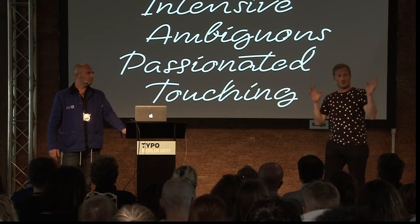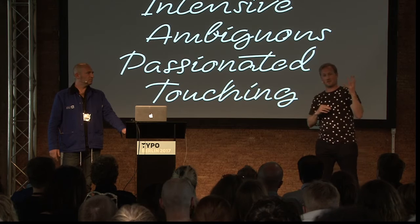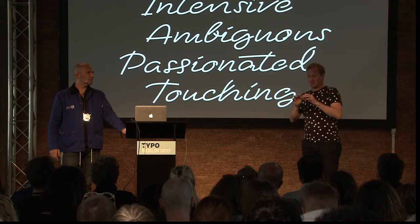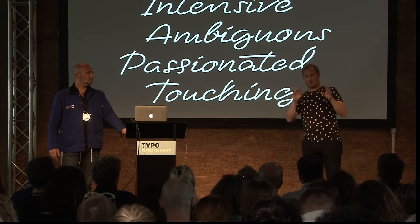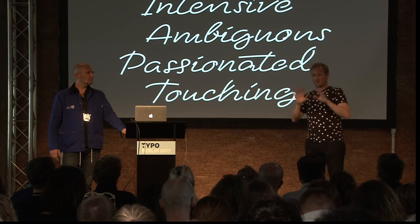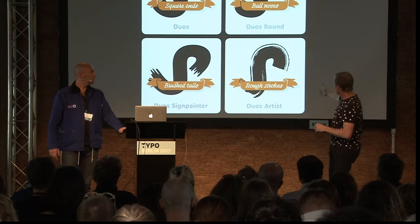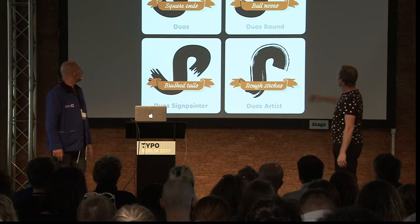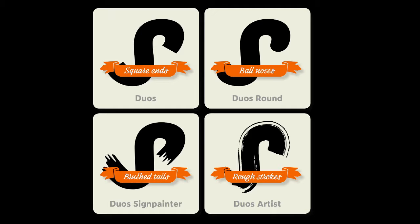Once you have a skeleton, you can do lots and lots of things with the font — it can look like anything because you have that skeleton. The basic family comes with four different versions: one with a straight end, one with a round end, one with a brushed end, and one which looks painted. You can have many thousands more iterations if you want.